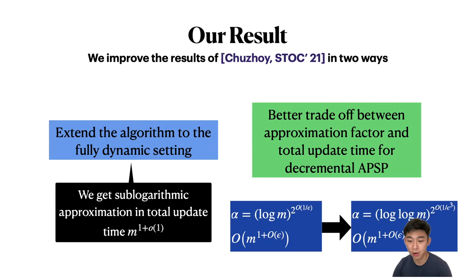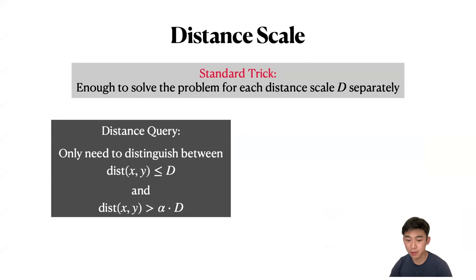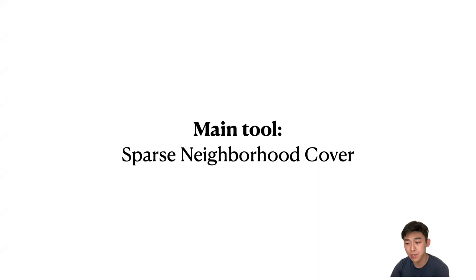I will now describe how we get these results. The first standard observation is that it is enough to solve the problem for each distance scale d separately. For distance queries, we only need to distinguish whether the distance between x and y is less than d or greater than alpha*d. For shortest path queries, we only need to respond correctly when the distance is approximately d, returning a path of length close to d. From now on, let's fix a distance scale d.